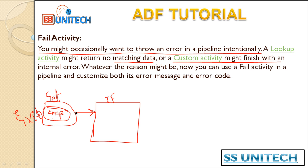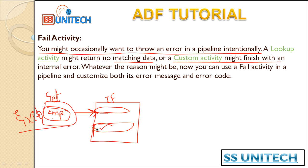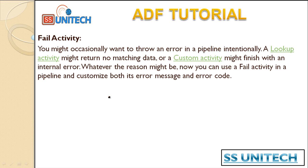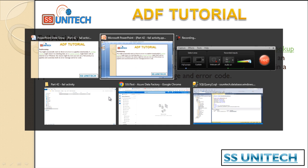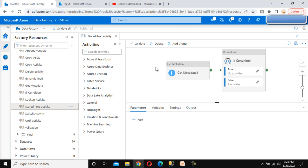If the file is there, we proceed in the If Condition activity. Under the true branch, if the 'exists' value is true, we directly load the data. If the 'exists' value is false, we execute a stored procedure that logs that the source file is not available. This is what we covered in the last video — the Stored Procedure activity.